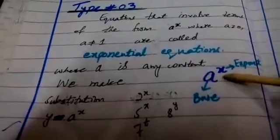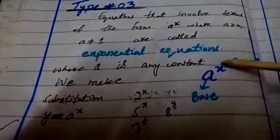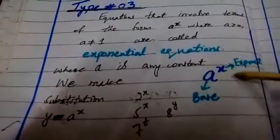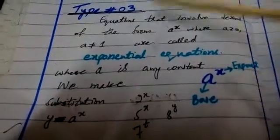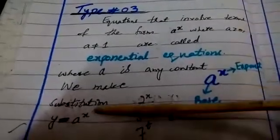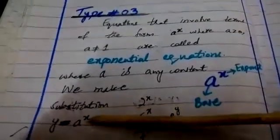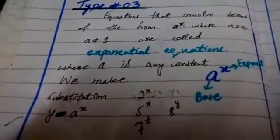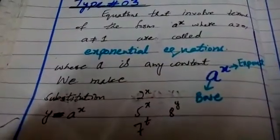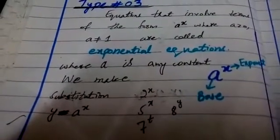Where a is any constant, a power x ki form me, hummare paas jo bhi equations hoongi, jis mein hummare paas exponential wali term hogi, woh mari type 3 se related hogi. Usko solve karne ke liye hamne substitution karna hai a power x equal to y. Jo exponential term hogi, usko hamne y ke equal leke phir solution find karna hai.